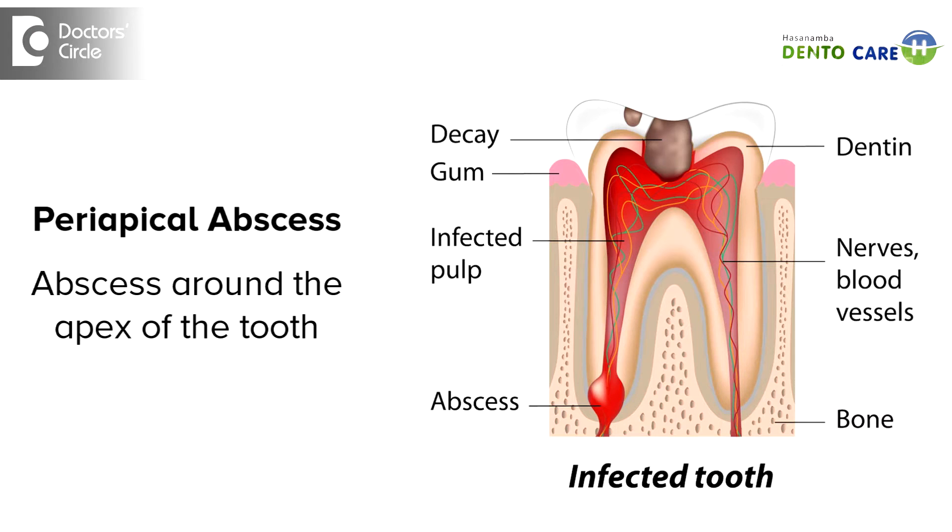Depending upon the patient's general health and immunity, if the tooth is mobile mainly because of periapical abscess or periapical infections, we can definitely save the tooth by doing root canal treatment. Once the root canal treatment is done for periapical abscess patients and the abscess comes down, the mobility of the tooth will reduce and the tooth will become firm. Once it becomes firm, we can definitely save the tooth.